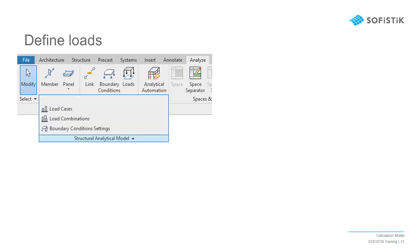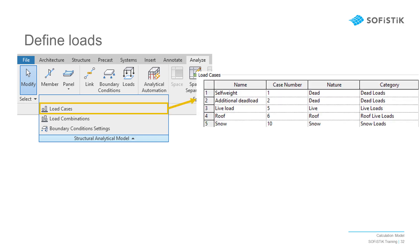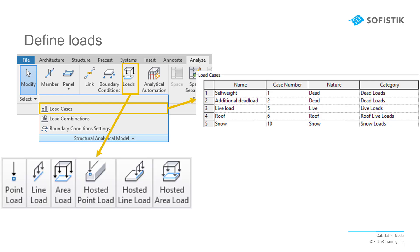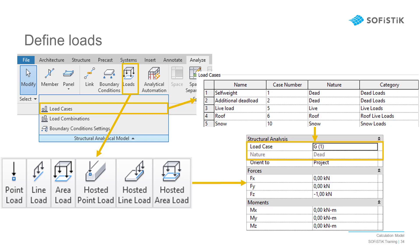With a stable model, we can now think about defining loads. In the Revit menu Analyze, two functions are required. First, we need to define all the load cases which we will use. In the command Load Cases, we can create new load cases with a name, a number, and a load nature. Once this is done, we can create the load objects with the command Loads and choose the specific type of loading we want to use. In the corresponding Revit properties, we can specify the loading value and assign this load to one of the load cases created previously.